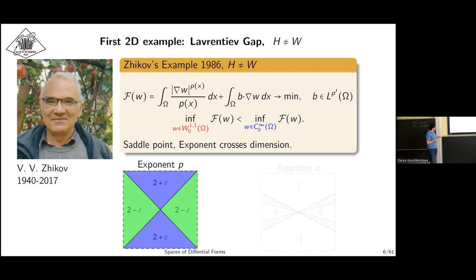His example is in a disk, but for our purposes it will be more convenient to use these square blocks. It is greater than two in this part and less than two in this part. This is a subtle point for the exponent, and in his example the exponent crosses dimension, so-called dimensional threshold.